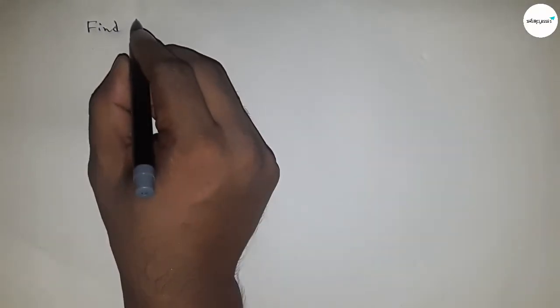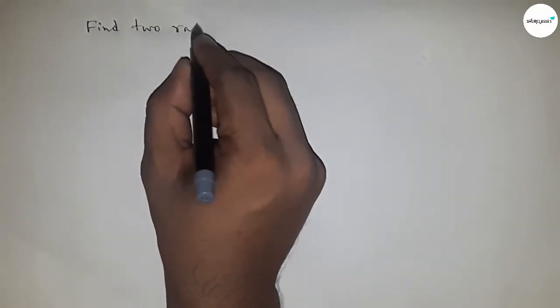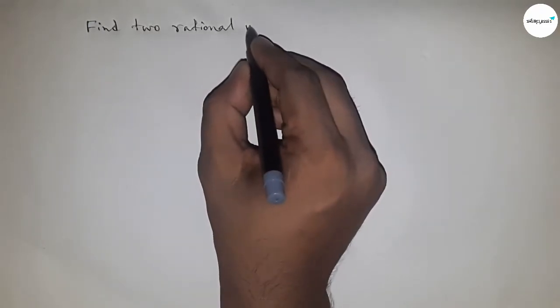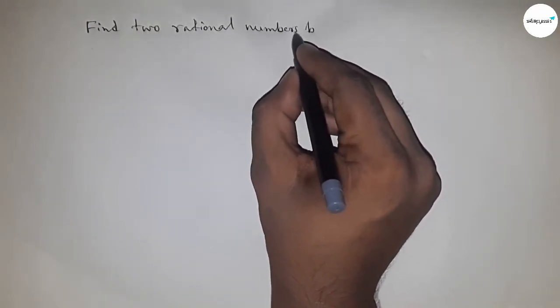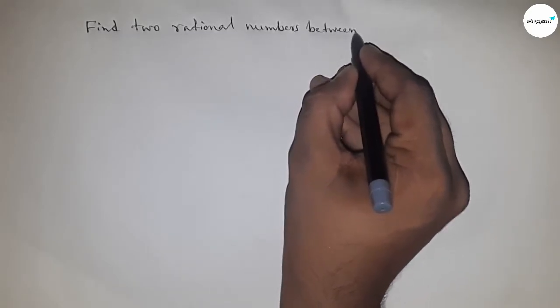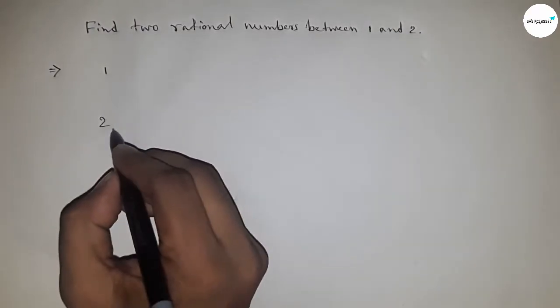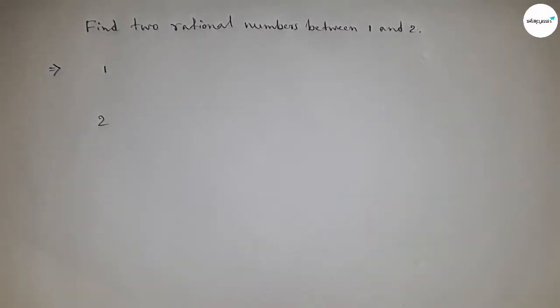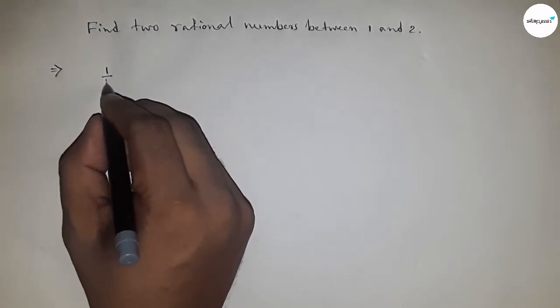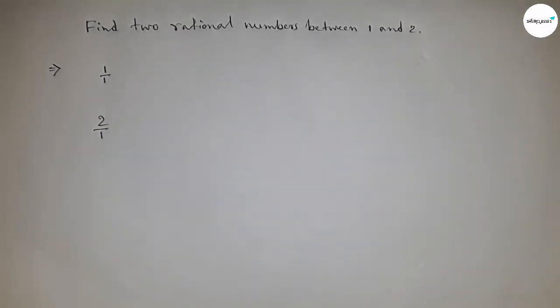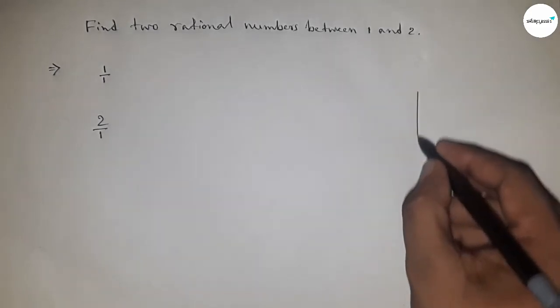Hi everyone, welcome to SSR classes. Today in this video, how to find two rational numbers between 1 and 2. So finding two rational numbers between 1 and 2, let's start. First of all, write down here the given numbers 1 and 2. Then we can express 1 as 1 upon 1 and 2 upon 1.